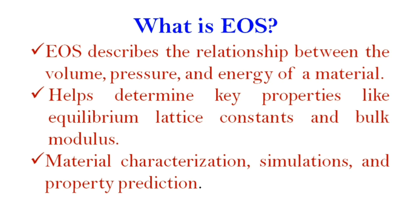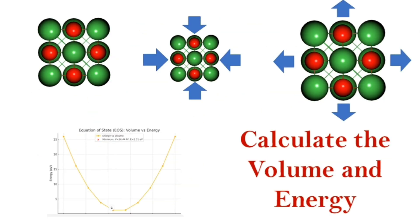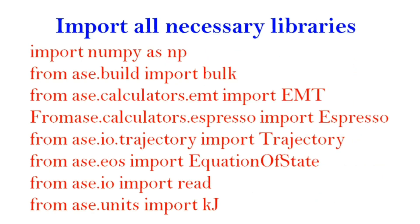We will determine the equation of state for nickel oxide (NiO). The procedure is: initially we create a structure of NiO, then change its lattice parameter by reducing it by 5% and increasing it by 5% from its original position. From this range we will create 10 images of equivalent size, and for each image we will calculate the volume and energy. After that we will create the equation of state and plot the energy-volume graph.